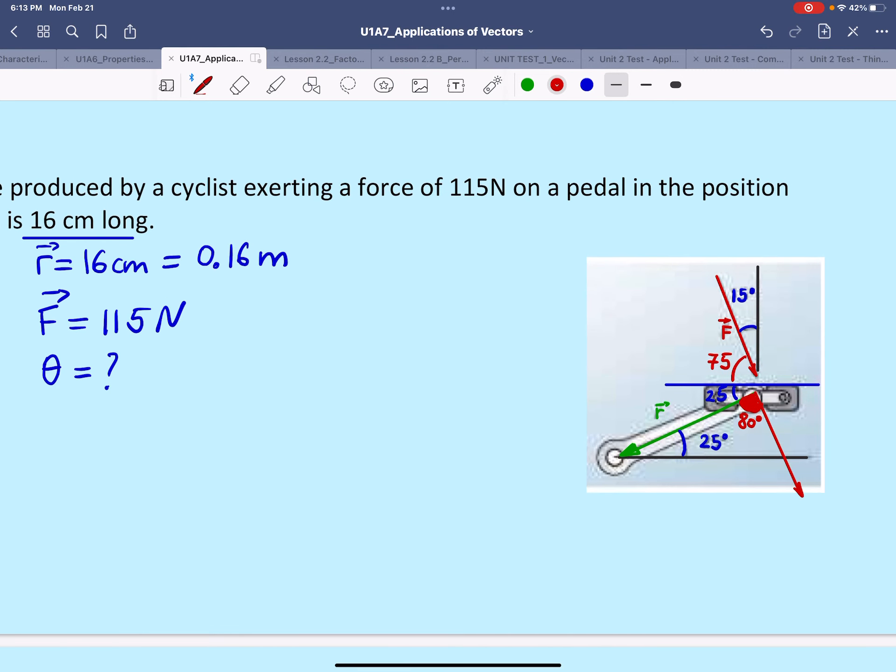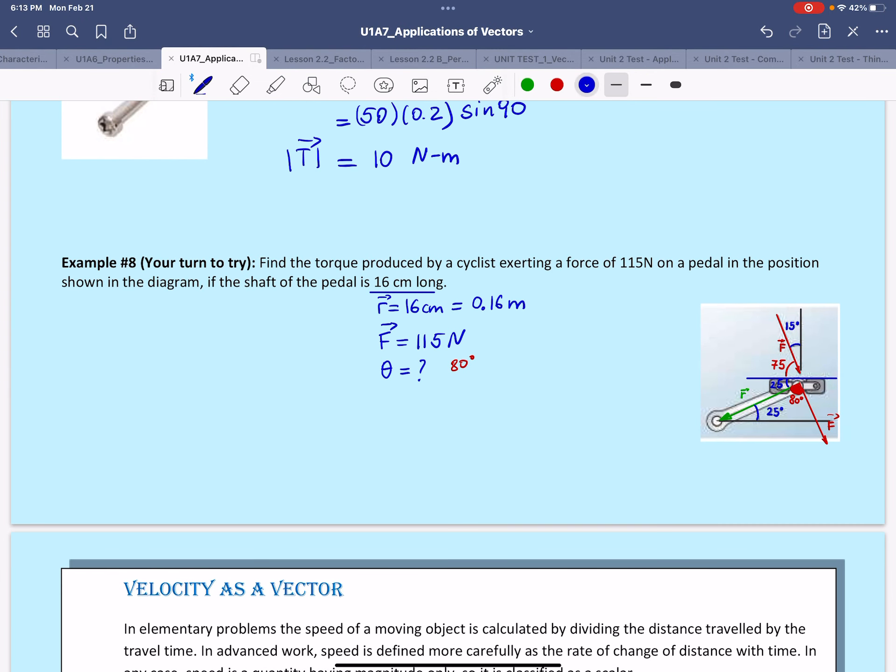Now that we know the angle made between the force and R is 80 degrees, we can use the formula for the torque. Torque would be equal to magnitude of the force, magnitude of R, sine of angle 80, times the unit vector N, which is 115 times 0.16 times sine of 80 degrees.